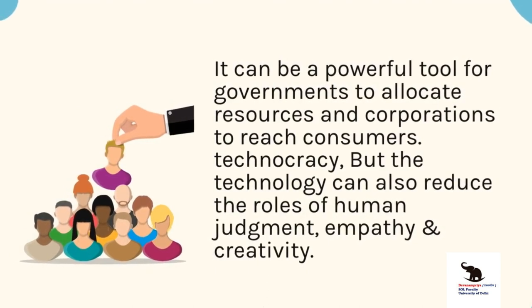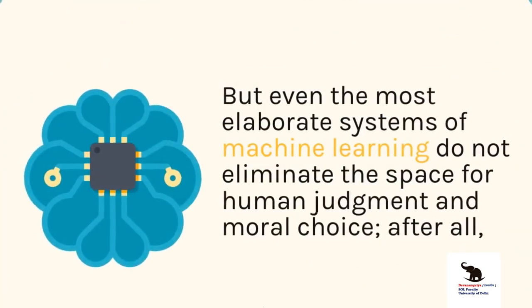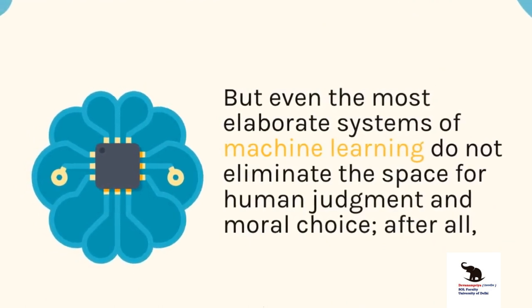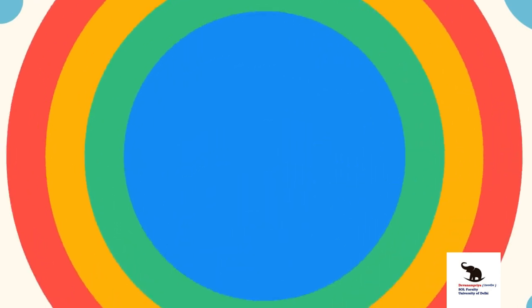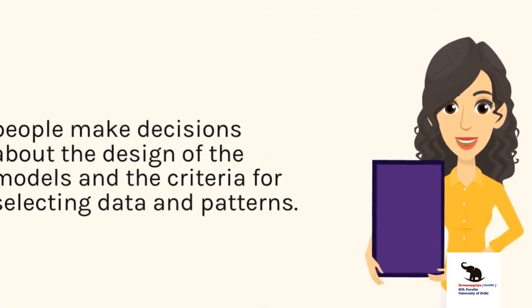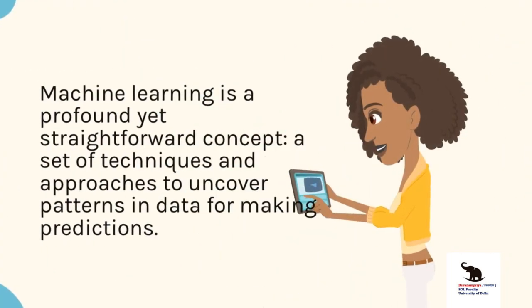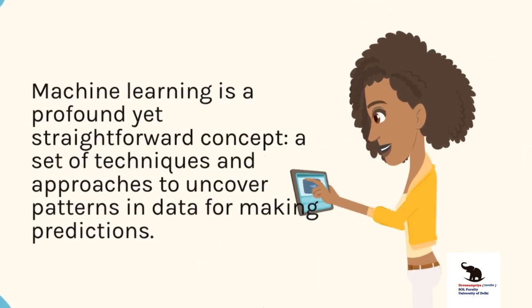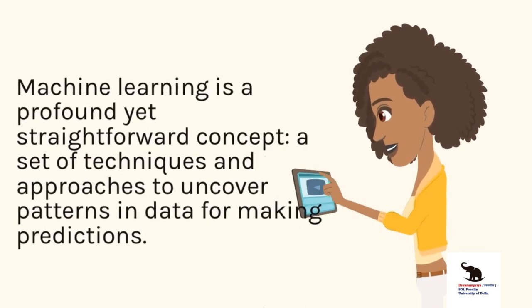Technocracy aside, the technology can also reduce the roles of human judgment, empathy, and creativity. But even the most elaborate systems of machine learning do not eliminate the space for human judgment and moral choice — people make decisions about the design of the models and the criteria for selecting data and patterns. Machine learning is a profound yet straightforward concept: a set of techniques and approaches to uncover patterns in data for making predictions.